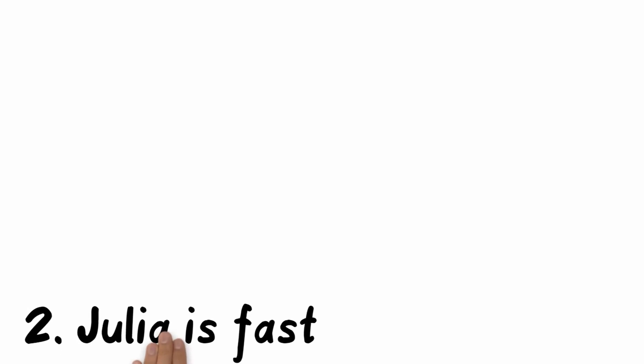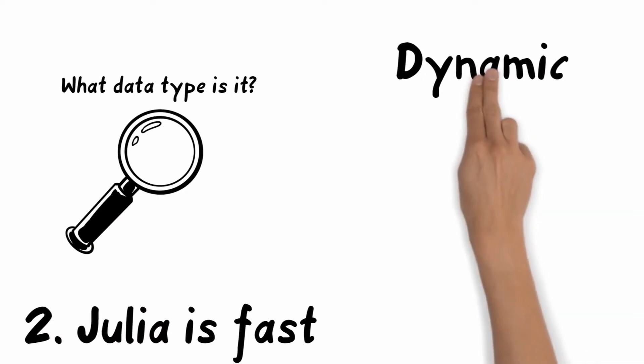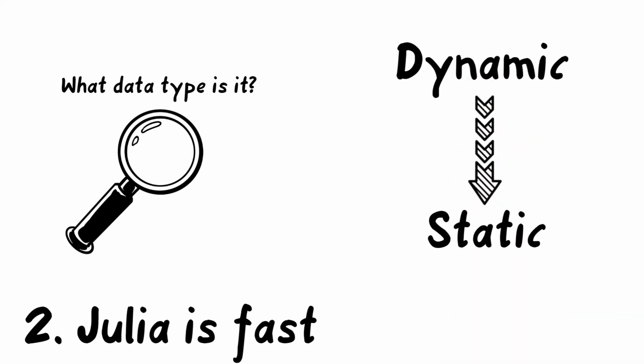But why is it so fast? The first time when your program is compiled, Julia will find all data types and transfers your dynamic program into a static program. This takes some time, but after this it is super fast.